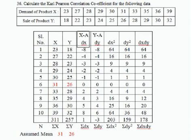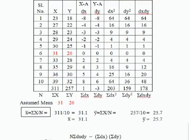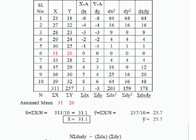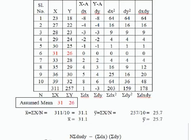Find the actual means: x̄ = Σx/n = 311/10 = 31.1, and ȳ = Σy/n = 257/10 = 25.7. Taking the nearest values to the actual means, we choose 31 as the assumed mean A for X and 26 as the assumed mean A for Y.